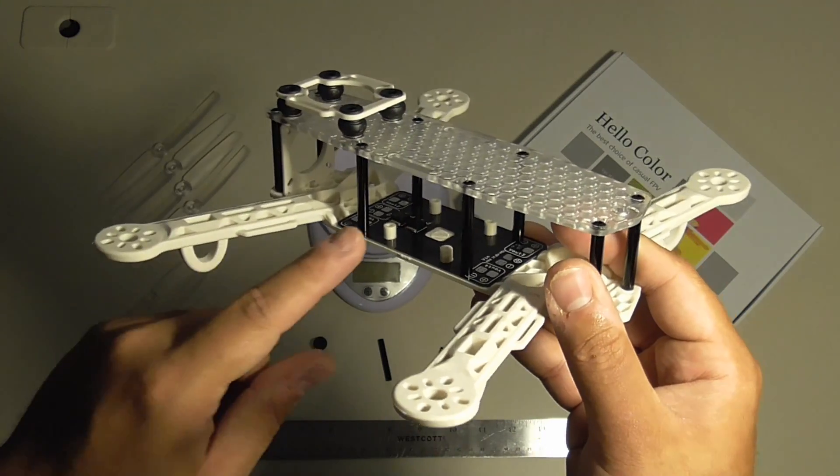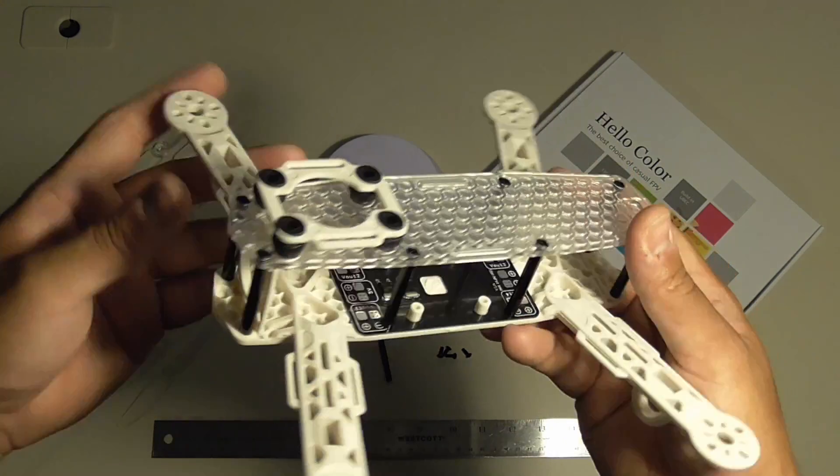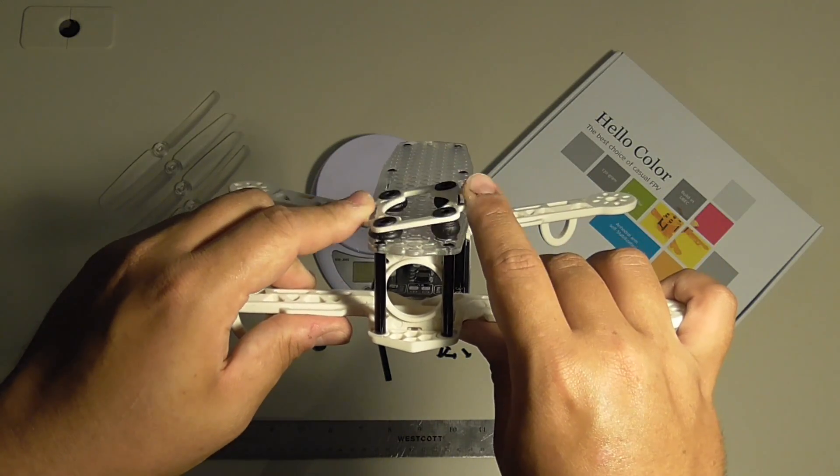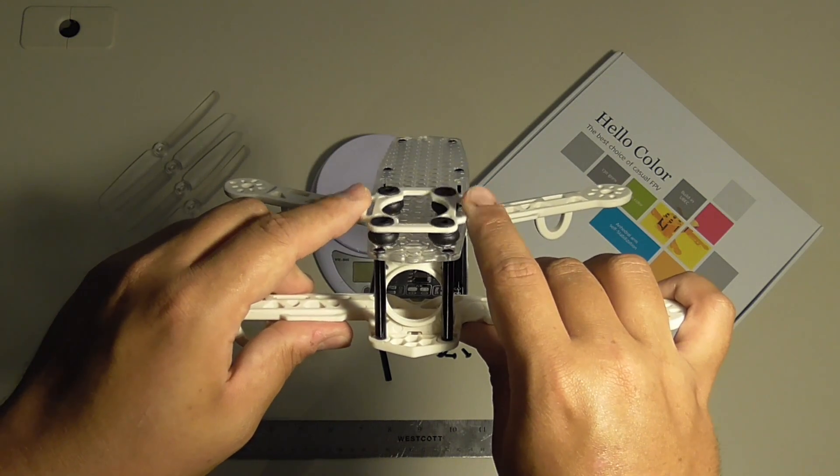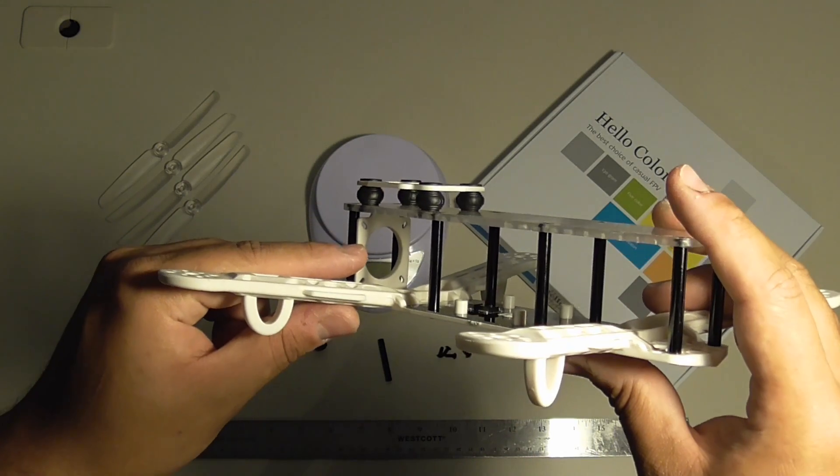The power distribution board has a 5V BEC. And on top is a standard Mobius style camera mount with vibration dampening balls. And up front there is an FPV camera mount.